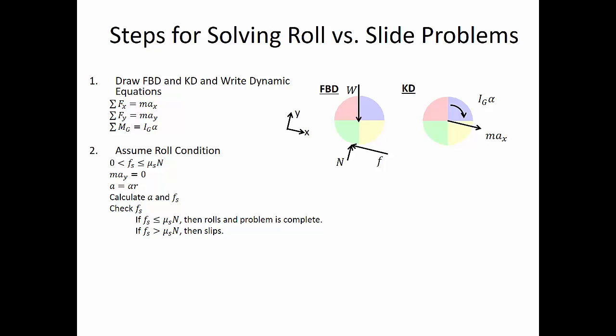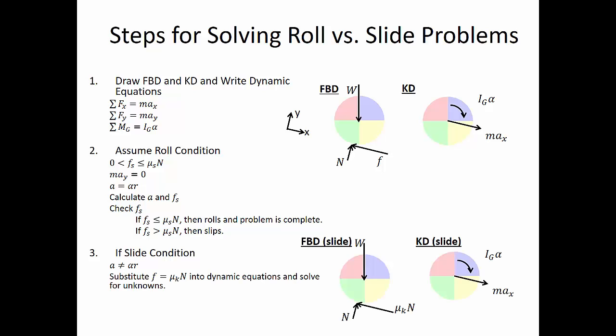Then once we have the friction, we can check whether or not that friction exceeds the maximum static friction. If our friction is less than or equal to our coefficient of static friction times the normal force, then the object rolls and the problem is complete. If our friction is greater than the coefficient of static friction times the normal force, then the object slips and we're in the slide condition. In this case, acceleration is not equal to angular acceleration times the radius. Instead, we substitute kinetic friction — our coefficient of kinetic friction times the normal force — and then solve our dynamic equations for the unknowns.